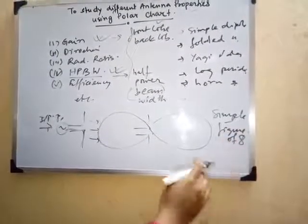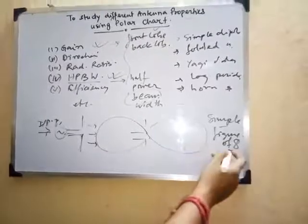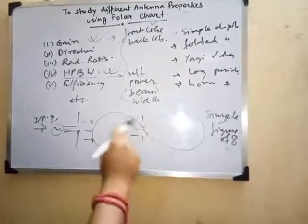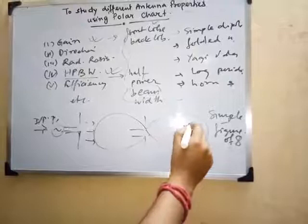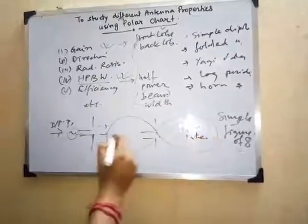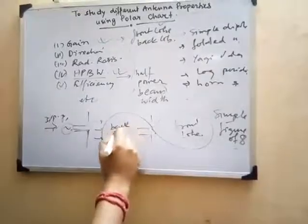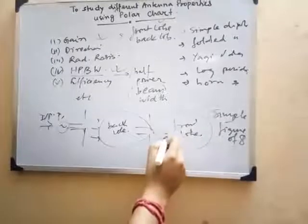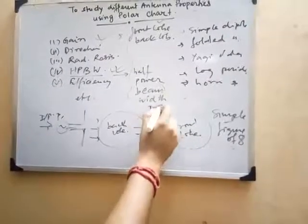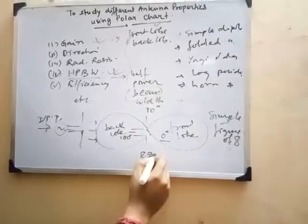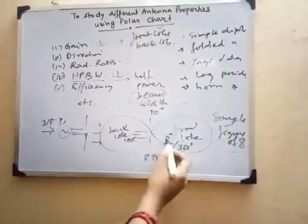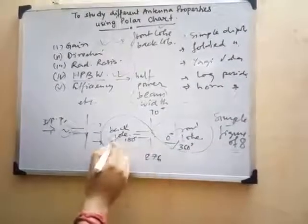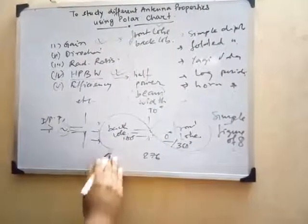The pattern looks like the number eight. This term is used because the antenna has two lobes — one at the front and one at the back. We consider the front direction as zero degrees, 90 degrees to the side, 180 degrees as the back, and 270 degrees on the other side, completing a full 360 degrees.